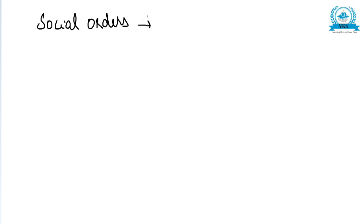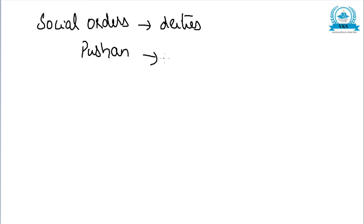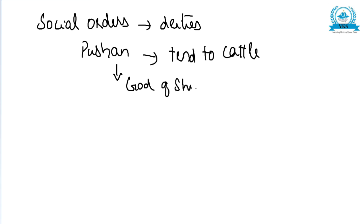Social orders came to have their own deities. Pushan, who was supposed to tend to cattle, came to be regarded as a god of the Shudras. The mode of worship also changed considerably during the Later Vedic Period.